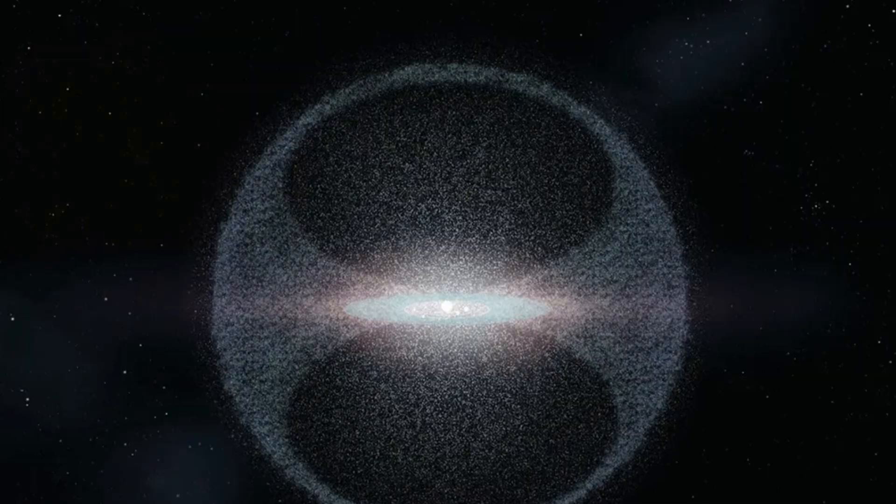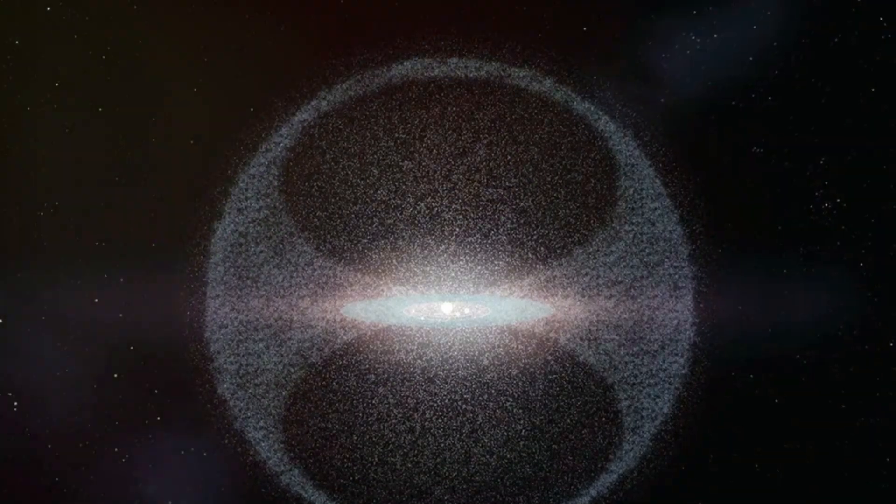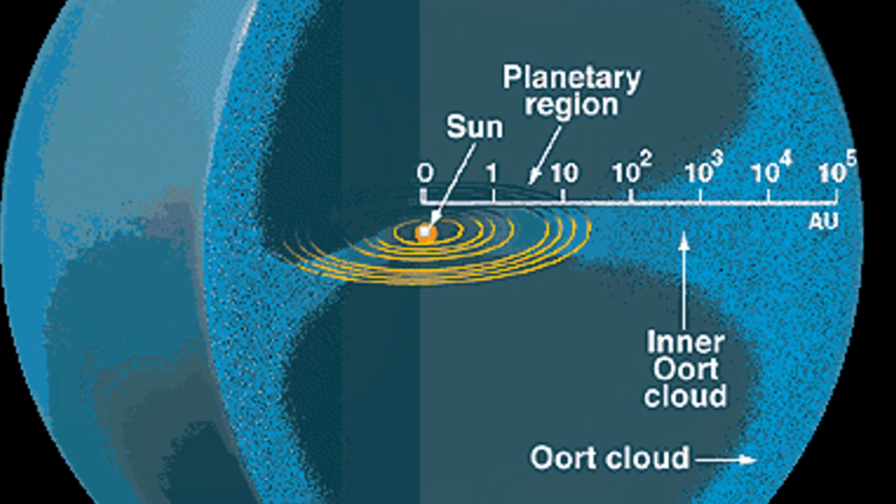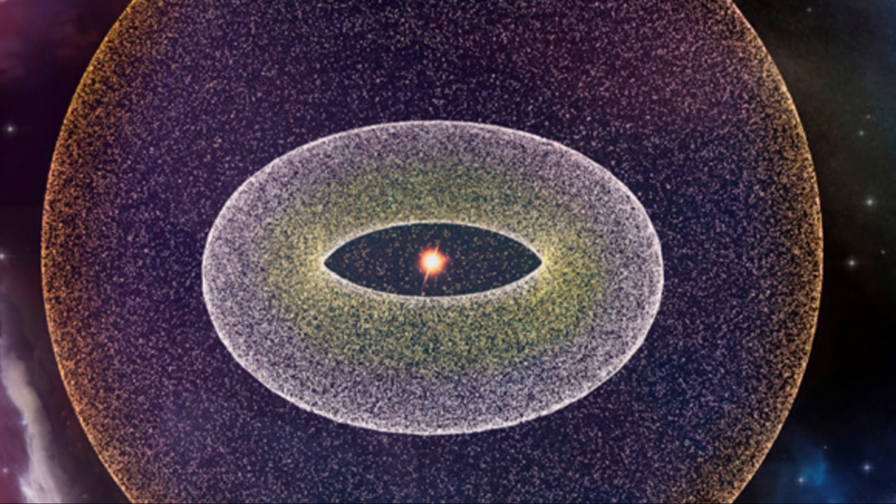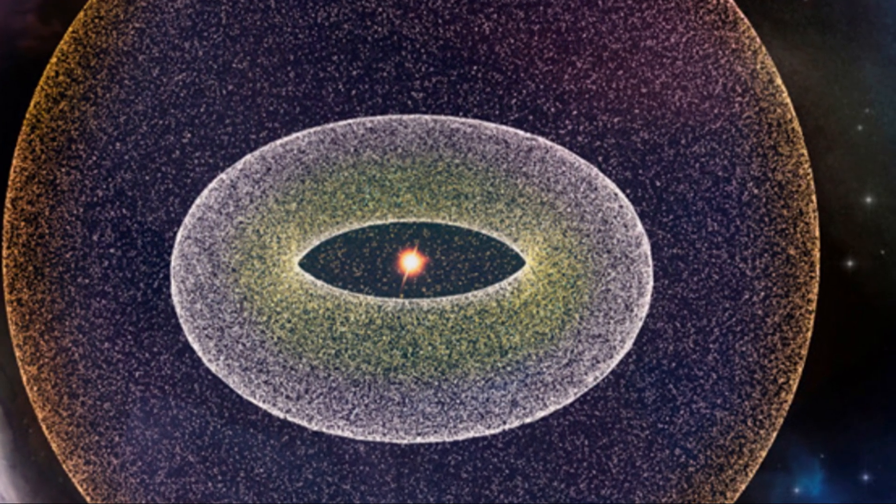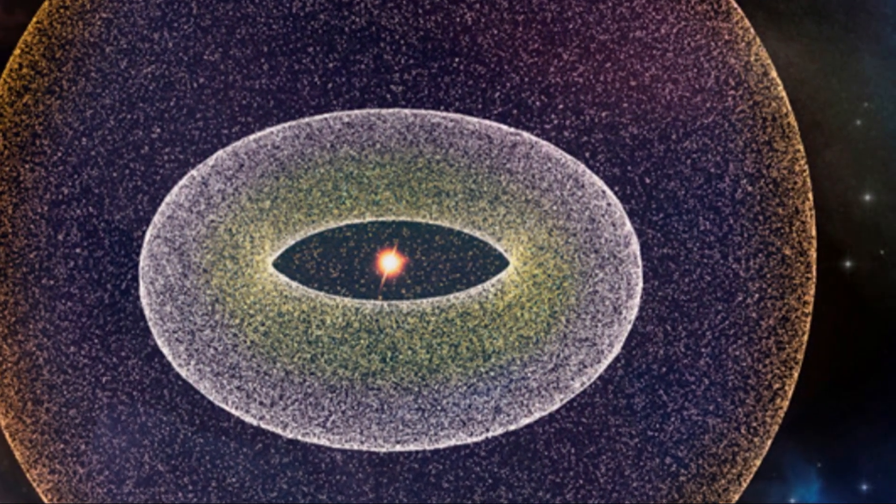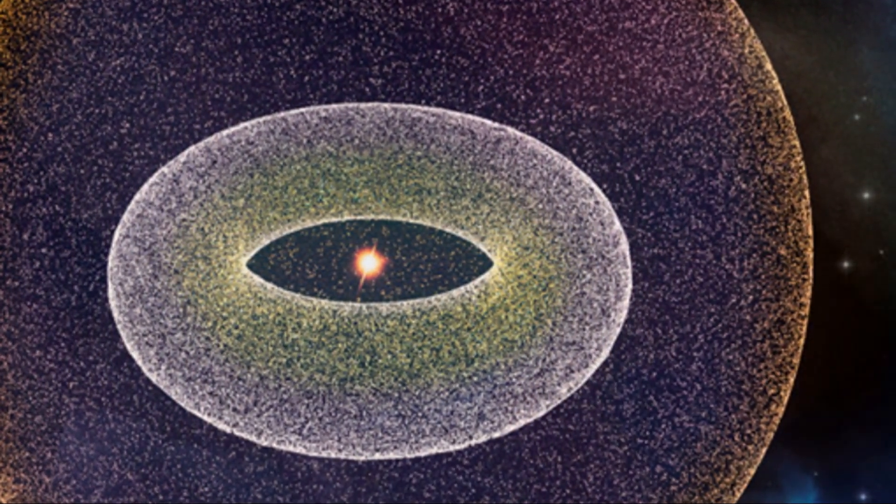The Oort Cloud is believed to have two distinct regions, the Inner Oort Cloud and the Outer Oort Cloud. The Inner Oort Cloud, also known as the Hills Cloud, is shaped more like a torus, or donut, and is more densely populated with icy objects.